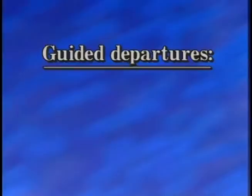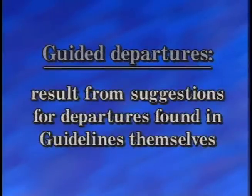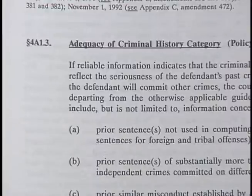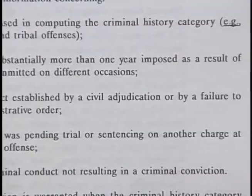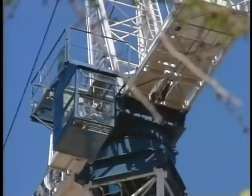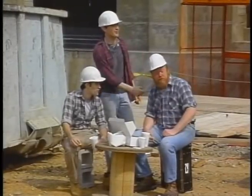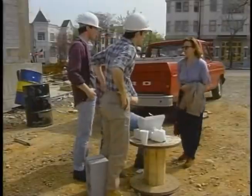The Commission also refers to 'guided departures' — those resulting from suggestions for departures found in the guidelines themselves. Commission policy statements and commentaries suggest a number of such departures. For example, Policy Statement 4A1.3 states that the court may consider an upward departure if the applicable criminal history category does not adequately reflect the seriousness of the offender's past criminal conduct, and it provides guidance for selecting the extent of the departure. The Act also requires the Commission to reflect the general inappropriateness of considering the education, vocational skills, employment record, family ties and responsibilities, and community ties of the defendant in recommending a sentence of imprisonment or the length of a term of imprisonment.